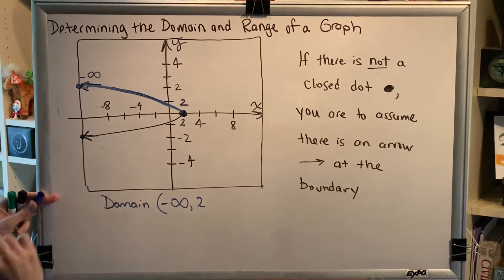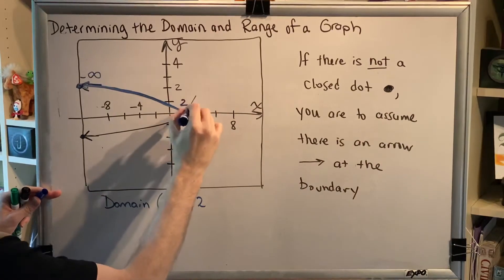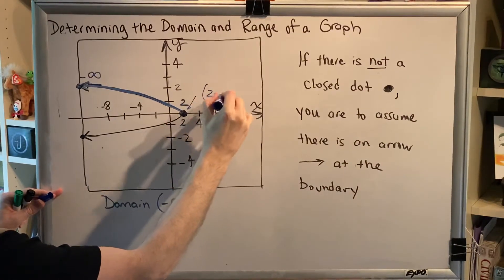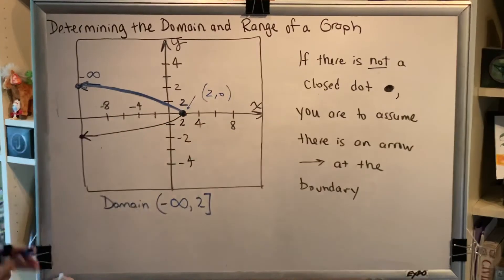So our domain goes from negative infinity all the way to 2. Infinity and negative infinity always get the parenthesis symbol. And in this case, because we do have a point on our graph with an x-coordinate of 2, we must include 2 in the domain and therefore use a bracket.